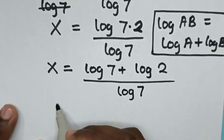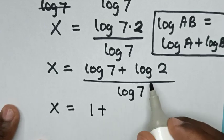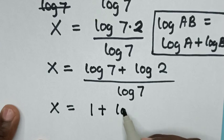Then in the next step, x will be equal to log 7 divided by log 7, which is 1, plus log 2 divided by log 7.